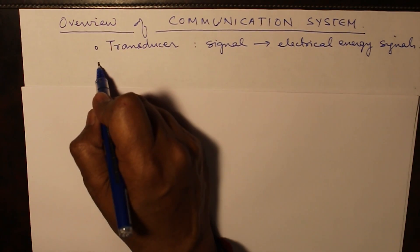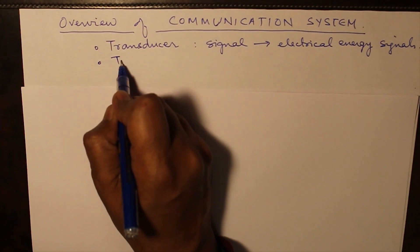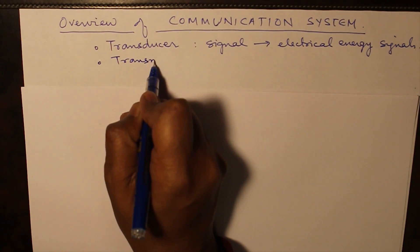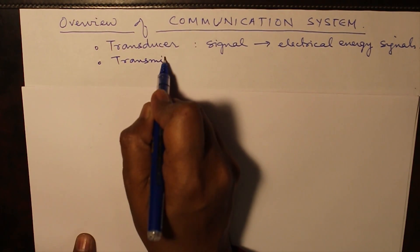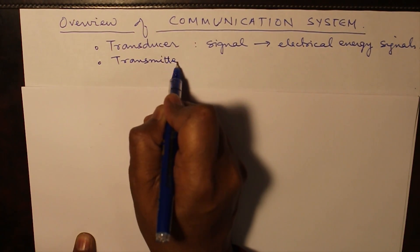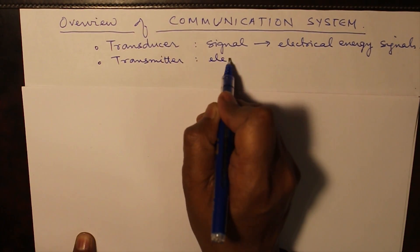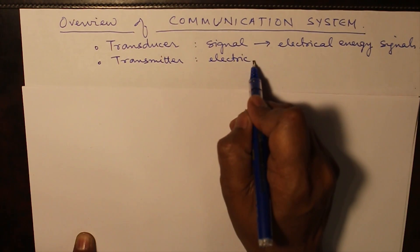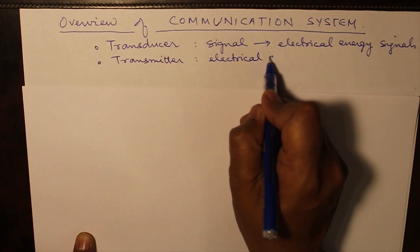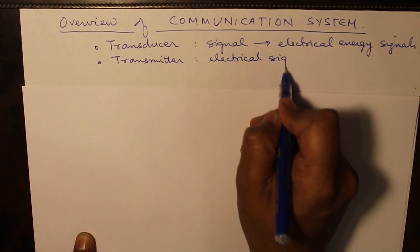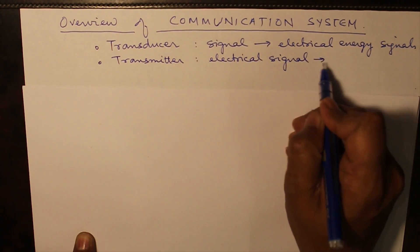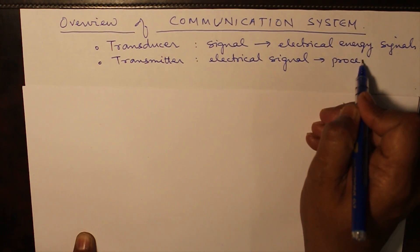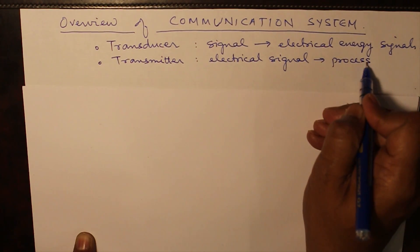The second term in the block diagram is Transmitter. A transmitter is a device that processes any electrical signal — it modifies or processes that electrical signal in some form. That device is called a transmitter.